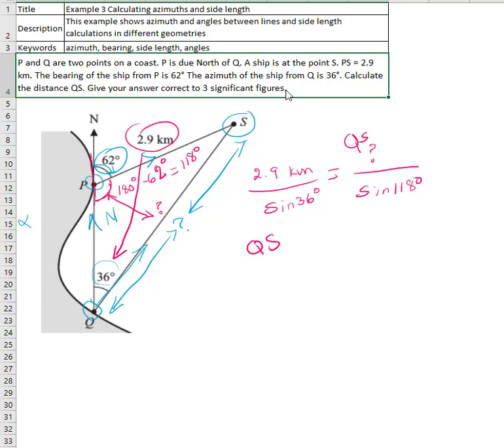QS equals 4.356 kilometers. It was a simple setup of the equation, finding a couple of the unknown angles, and using the law of sines to solve the question. End of solution.